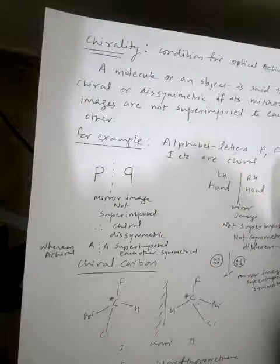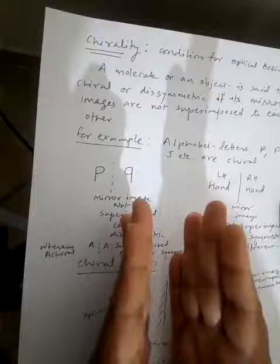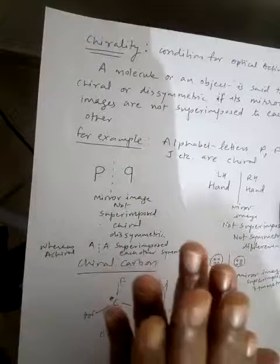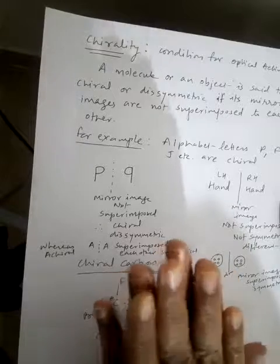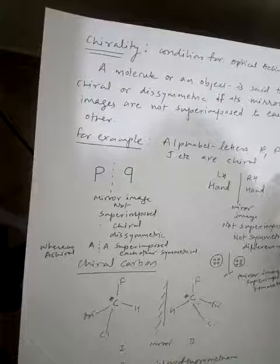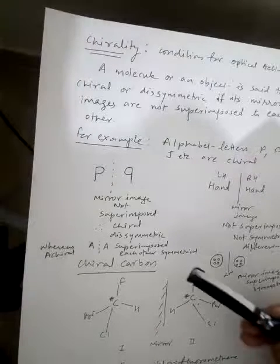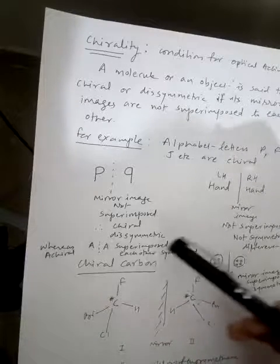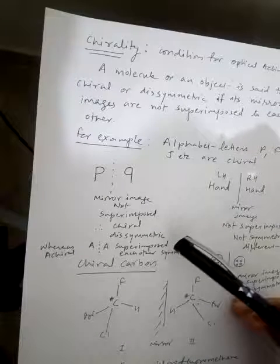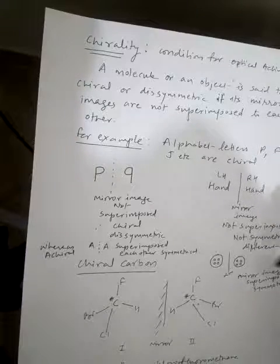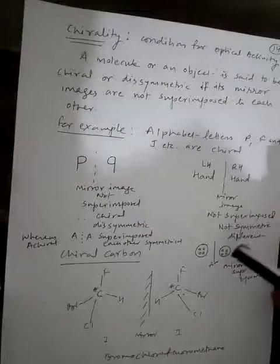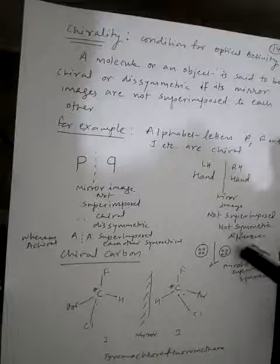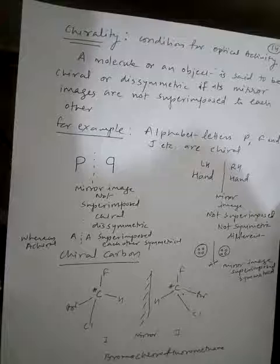Similarly, our hands are an example of chirality — the left hand and right hand are mirror images of each other but are not superimposable, so they are chiral. In contrast, the letter A is superimposable on its mirror image, meaning it is symmetrical. Objects whose mirror images are superimposable are symmetrical in nature.